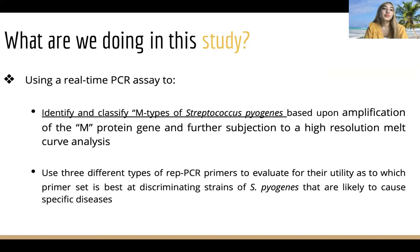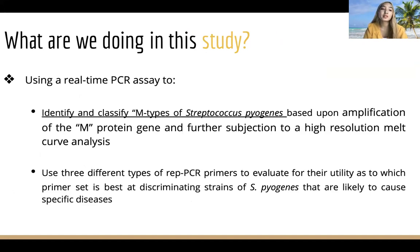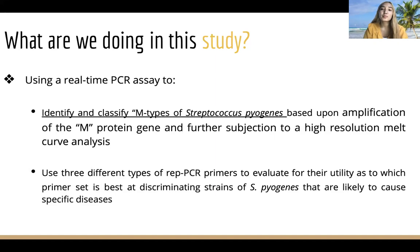In this study, we are using real-time PCR assay to identify and classify M-typing of Streptococcus pyogenes based on amplification of the M protein gene, with further analysis using high-resolution melt curve analysis. We are testing three different types of real-time PCR primers to evaluate which primer set best discriminates strains of Streptococcus pyogenes likely to cause specific diseases.